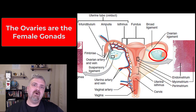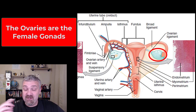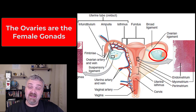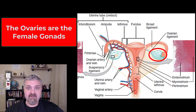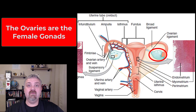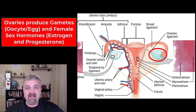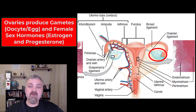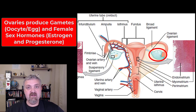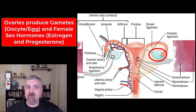The ovaries are what are known as the female gonads. Remember, when you hear gonads you might think of the male, but the gonads are the organ that produces sex hormones and gametes, and that is what the ovary is in females. The gamete that the ovaries produce is the oocyte or the egg, and the sex hormones would be your female sex hormones, primarily estrogen and progesterone. We will talk about the hormones a lot more later.